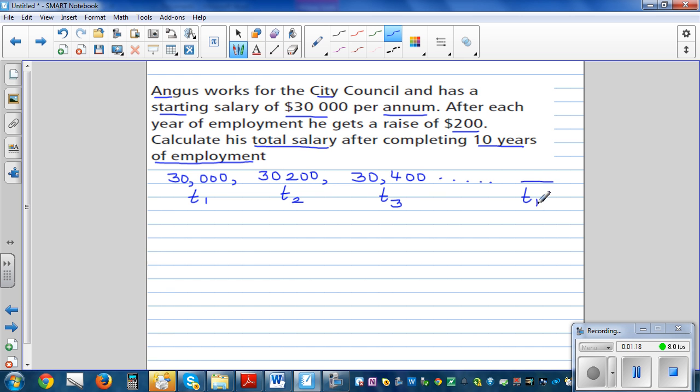So you want to add up to the t10, whatever that salary is. So you want to add basically the salary of the first year plus the salary of the second year plus the salary of the third year.